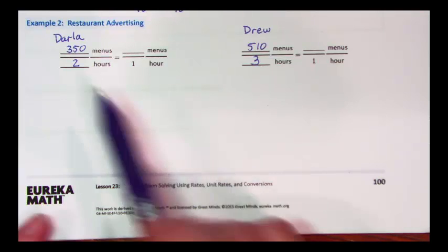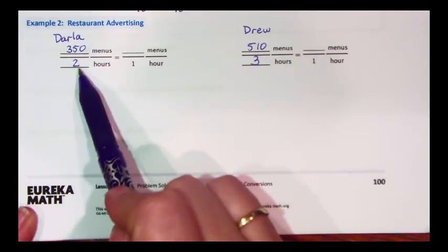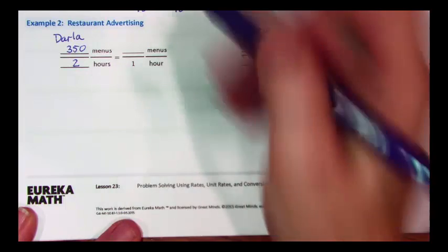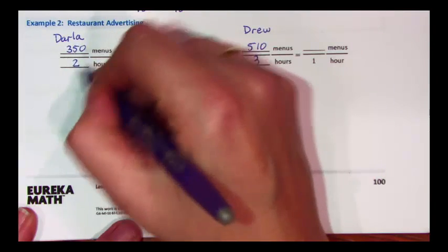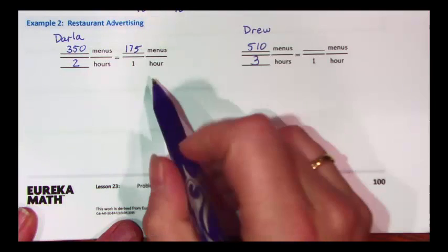Well, we need to compare these two rates. Darla does 350 menus in two hours. If I divide to find the unit rate, that's 175 menus in one hour.